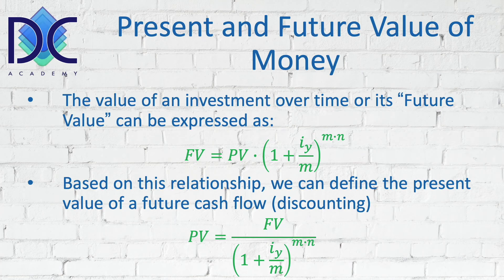M times N is the total number of periods. Basically, starting from the future value as a function of the present value and the interest rate, we can find an expression to discount the future cash flows into present value numbers.